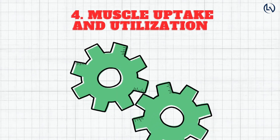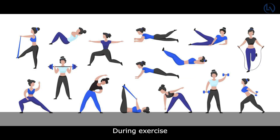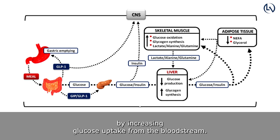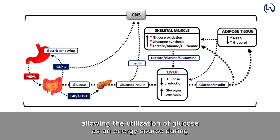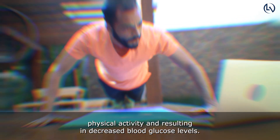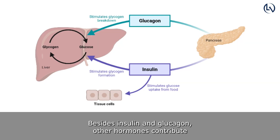Muscle Uptake and Utilization: During exercise, skeletal muscle enhances blood glucose regulation by increasing glucose uptake from the bloodstream. This is facilitated by insulin-independent mechanisms, allowing the utilization of glucose as an energy source during physical activity and resulting in decreased blood glucose levels.